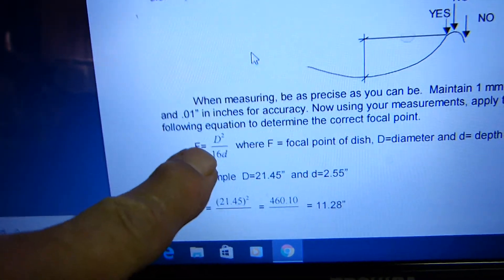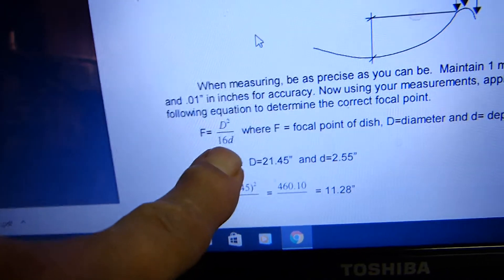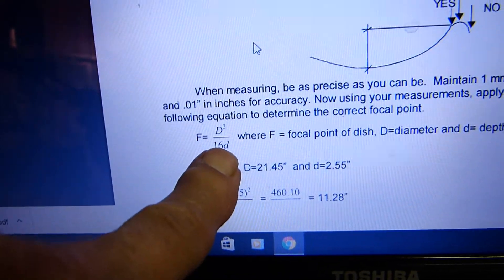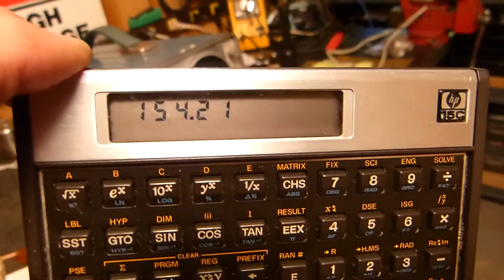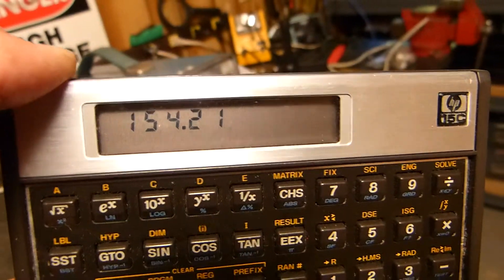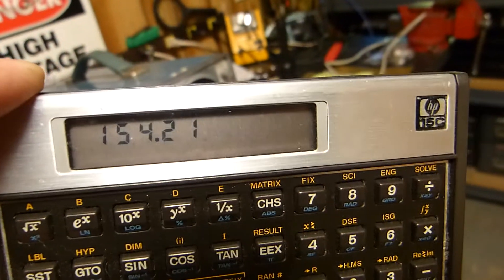And then you go to Google and you find out in a lot of different places that here's the formula right here: the focal length is d squared—that's the 450—divided by 16 times d, the distance from the center up to the straight line across it. And if you do the math, you end up with 154 millimeters—154.21 millimeters. Now we can't split it to one, but 154 millimeters happens to be the length of this wire right here.